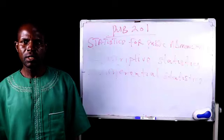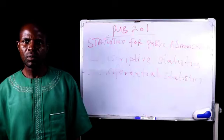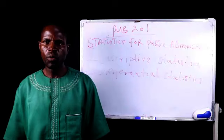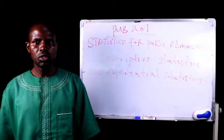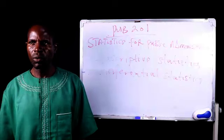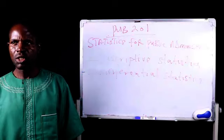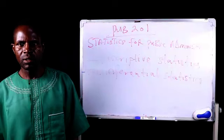In today's lesson, which is session 2 of the study, we'll be looking at the various measuring instruments that can be used in statistics. Broadly, we have two major instruments: descriptive and inferential statistics. Descriptive statistics involves explaining the property of data through the use of tables, pictographs, charts, and graphs. It is broken down into measures of central tendency and measures of variability or spread.